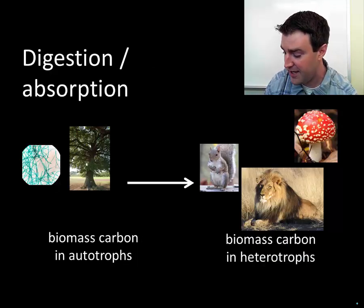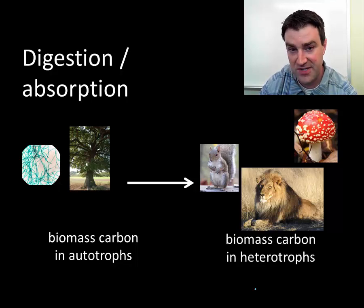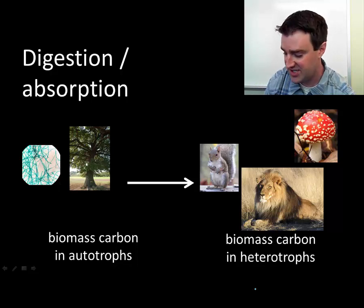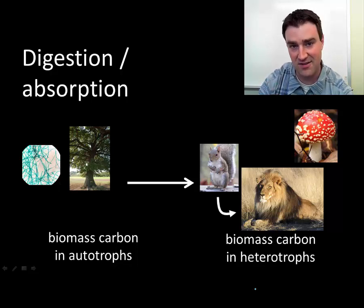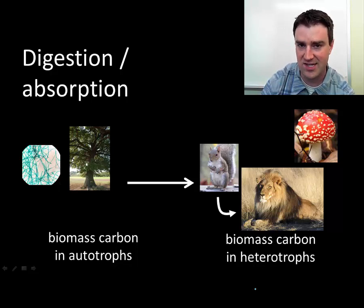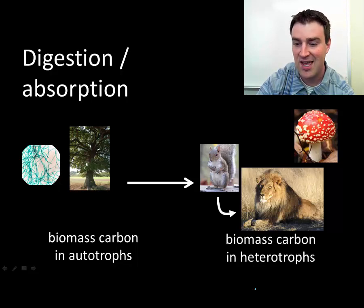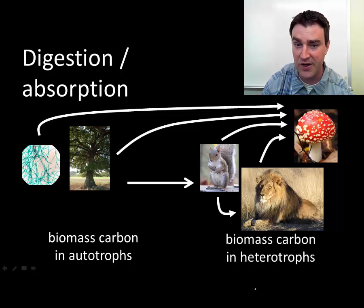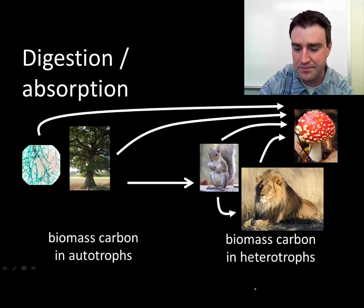What can happen to some of the biomass in those plants? Heterotrophs can eat some of it. How do we get access to our carbon? We don't make it ourselves through photosynthesis — we just eat it. Herbivores eat plants directly, carnivores eat herbivores, and omnivores do a bit of both. Decomposers are also heterotrophs — when organisms like plants, squirrels, or lions die, their biomass can be digested and absorbed by decomposers like fungi. Whether you're a consumer or decomposer, you're largely taking other organisms' biomass carbon, digesting it, and building up your own body.